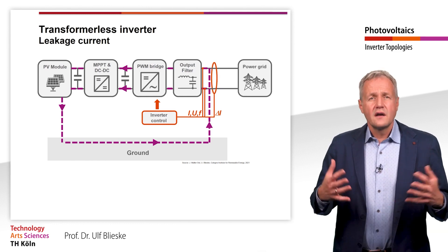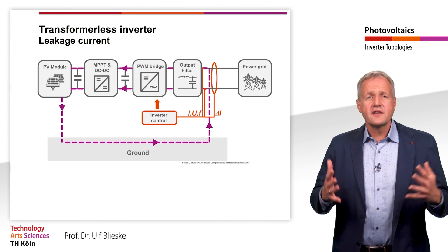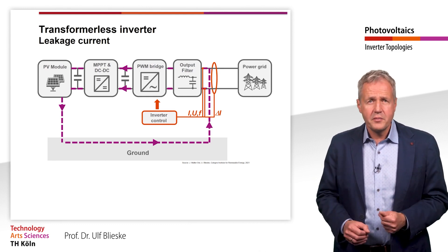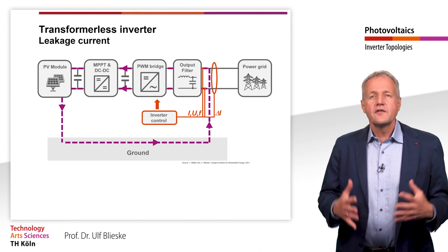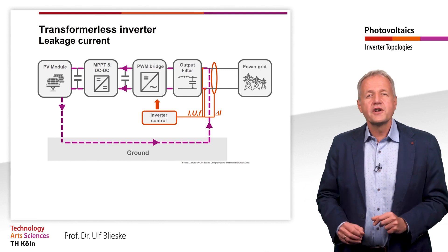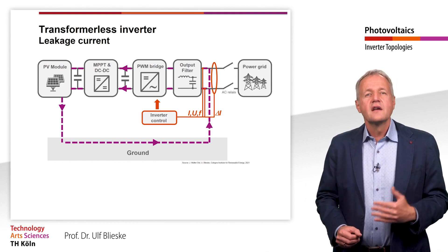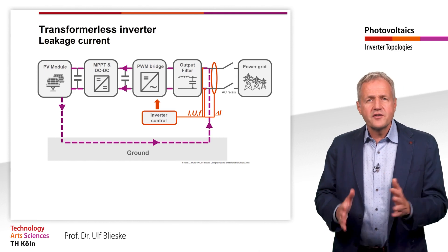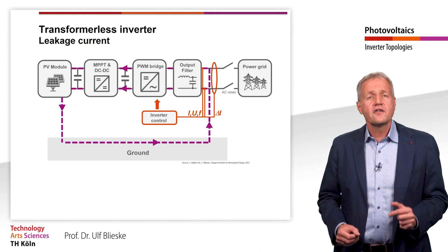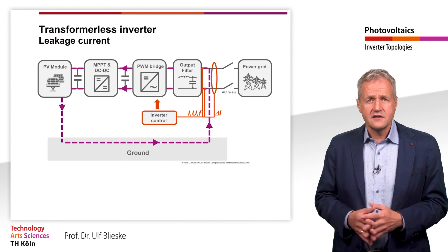An AC fault current above 30 mA can be life-threatening for people. Therefore, the inverter must permanently monitor the residual current delta I and interrupt the circuit immediately if 30 mA is exceeded.